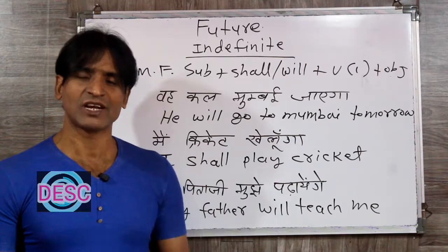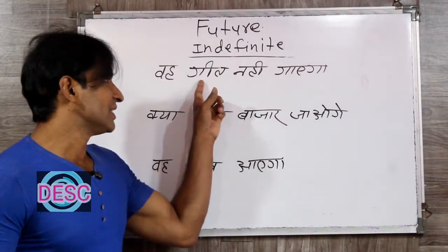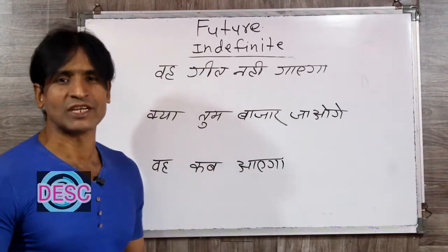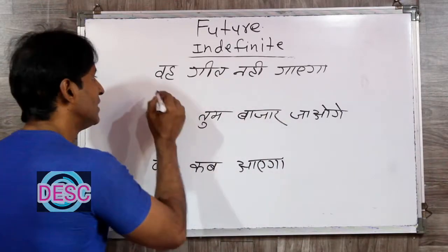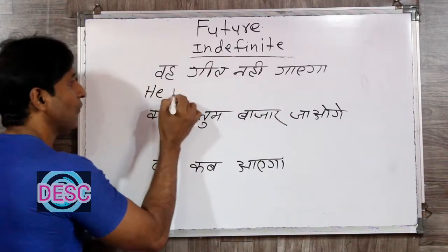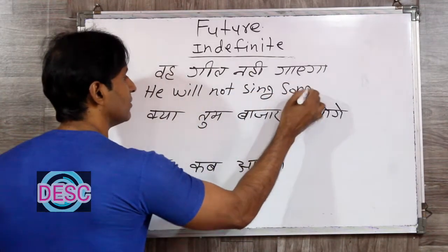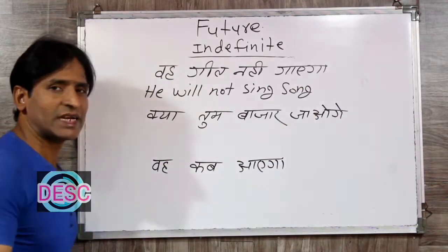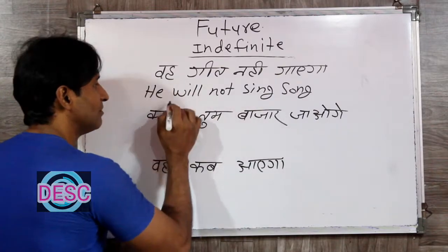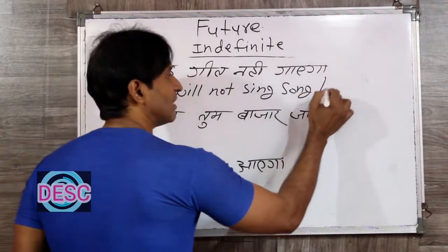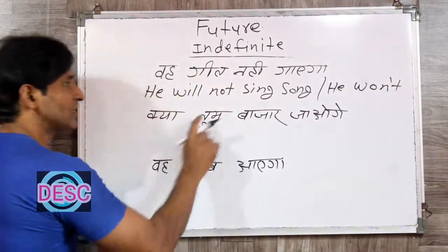Friends, now let's quickly look at negative, interrogative, and question forms. 'Woh geet nahi gayega' — He will not sing a song. The negative formula is: after the helping verb, add not. We can also write will not as won't — the short form. He won't sing a song. And the short form of shall not is shan't.